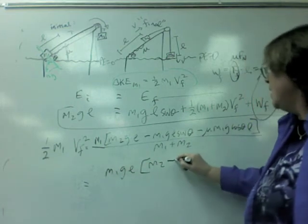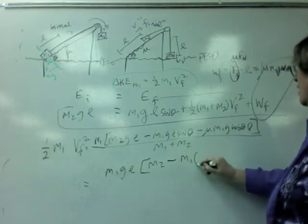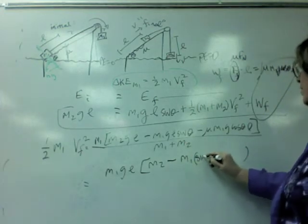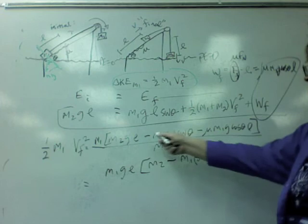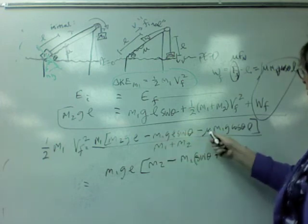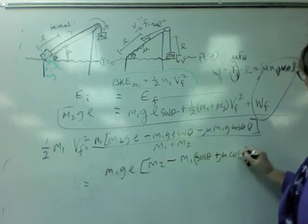You'd have M2 minus M1 times sine theta. Minus to minus is a plus mu cosine theta.